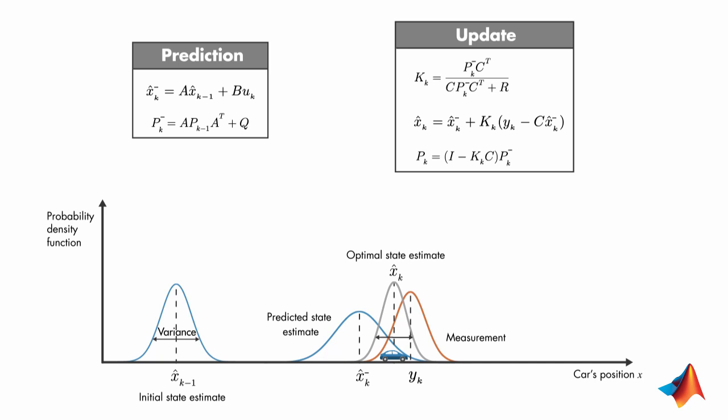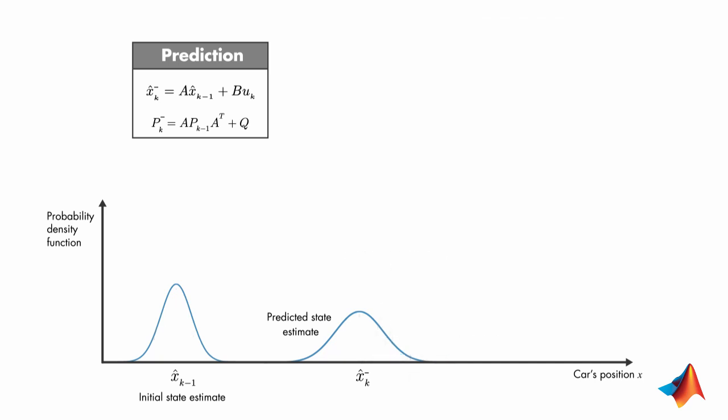The Kalman filter is a two-step process. Let's first start with the prediction part.